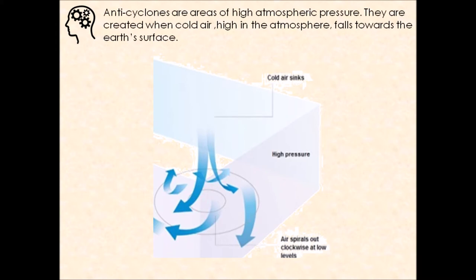Anticyclones are what we call areas of high pressure. They are created when we have cold air really high in the atmosphere falling towards the earth. That air is descending. This falling air increases the weight of the air pressing down on the earth's surface. As that cold air descends through the atmosphere, it becomes slightly warmer, resulting in what we call high pressure.